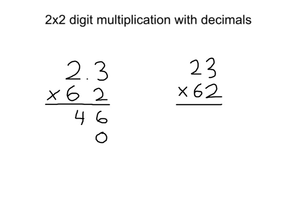Now we can simply do, working from right to left, 6 times 3 is 18. And then we can do 6 times 2 plus 1, which is 13.